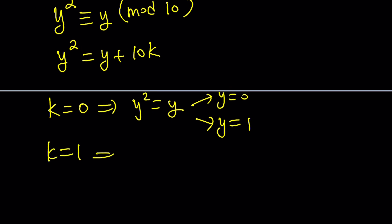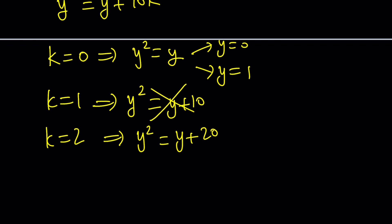What about k equals 1? Is that going to give us more solutions? Let's go ahead and find out. This gives us y squared equals y plus 10. But as you know, this equation has no integer solutions. Because remember, x, y, z, t are digits, so they are 0 through 9 integers. We're going to go ahead and try k equals 2. y squared equals y plus 20. And as you know, this has a solution, which is y equals 5. So far, we got three solutions.